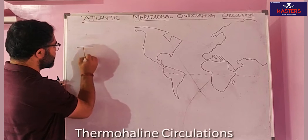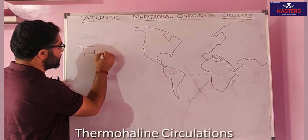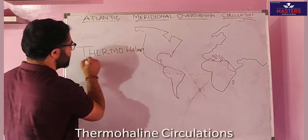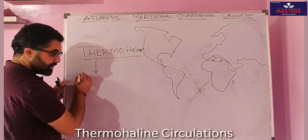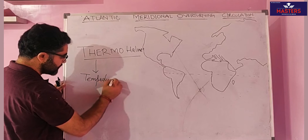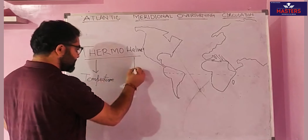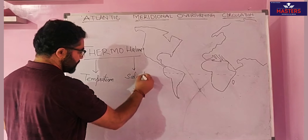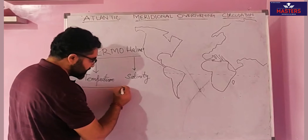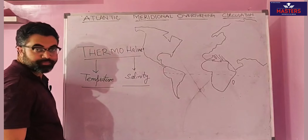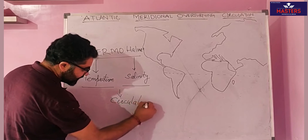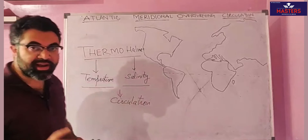To understand this entire phenomenon of meridional circulation, let us first understand what thermohaline circulations are. The word thermohaline: 'thermo' means temperature and 'haline' means salinity. So circulations caused by temperature and salinity are called thermohaline circulations.